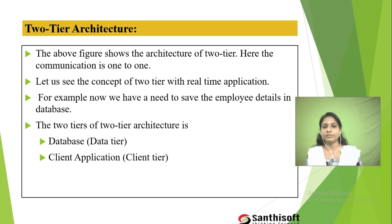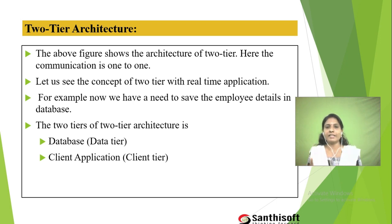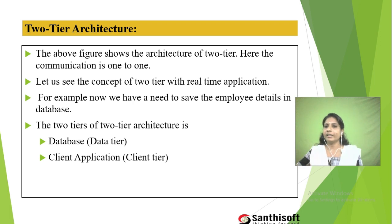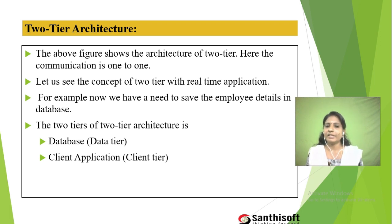For example, we need to save employee details in the database. In this case we use only two tiers. The first is the client application — that is the client tier. The second is the database where we save the employee details for further reference — that is known as the data tier. So here we are using only two tiers: the client tier and the data tier.